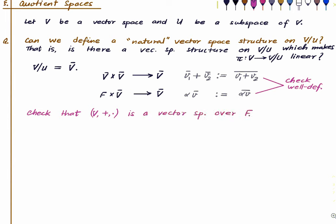This is verbatim the same as what we did in our lecture on exporting set-theoretic quotienting. So there is a natural vector space structure on the set of all the cosets of V mod U, and this is called the quotient space obtained using U.